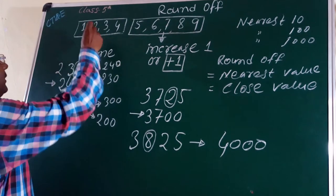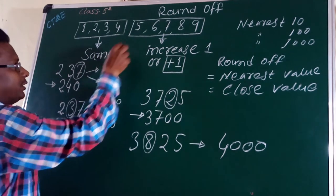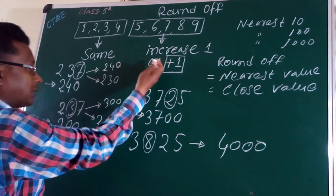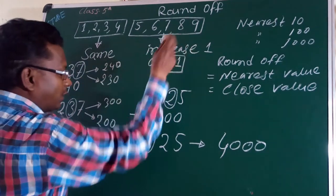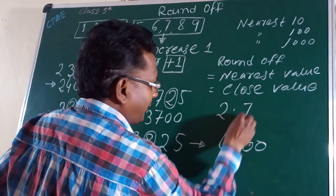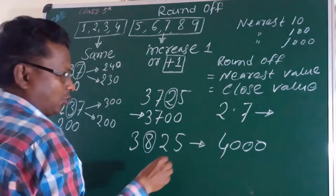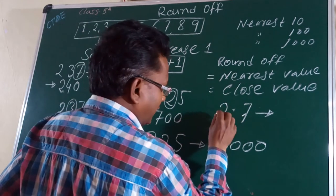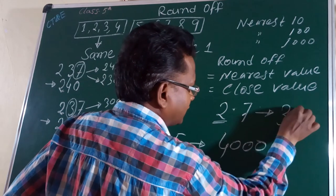2.777 को whole number में roundup करेंगे to 777, 5 से ज्यादा है। अगर roundup करेंगे whole number में one increase हो जाएगा, three zero हो जाएगा।